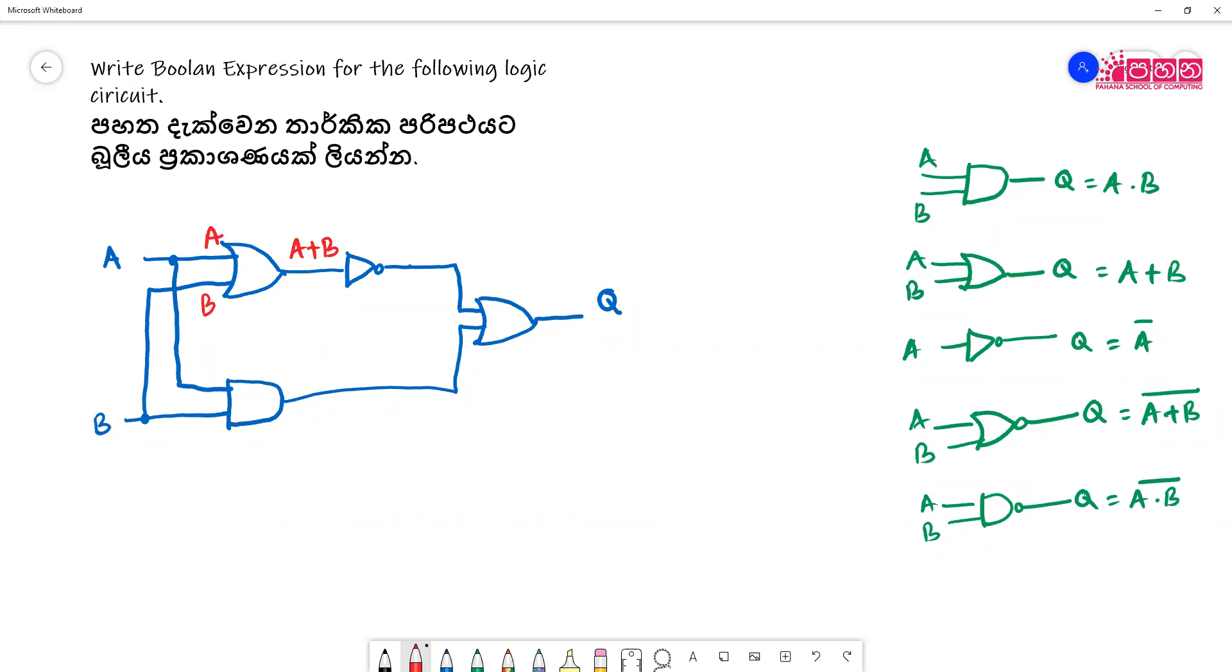This is AND gate, what is the output here? Make your output A dot B. So we are getting A dot B.